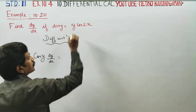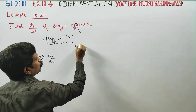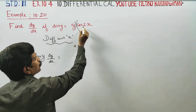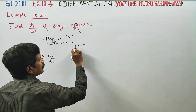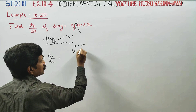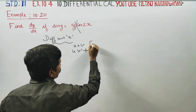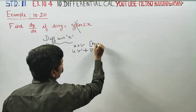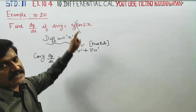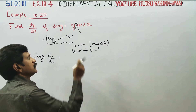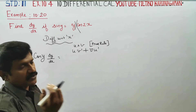On the right side, it is y into cos 2x, which is a product. That is the uv model: u into v-dash plus v into u-dash. We apply the product rule — differentiate one of them, then differentiate the other — that is the concept.